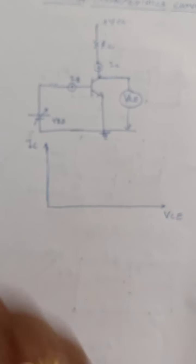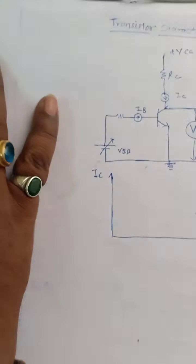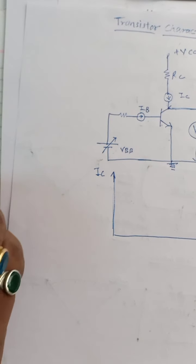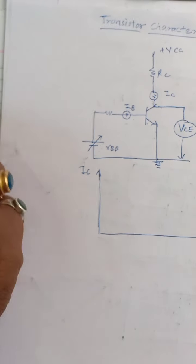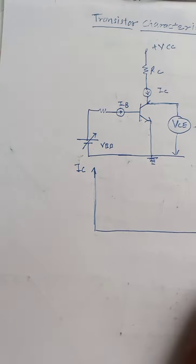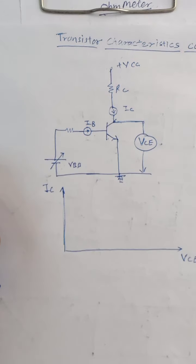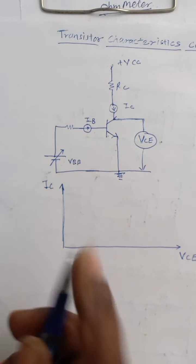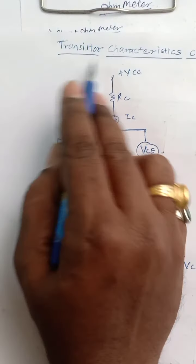Good morning. Today we are going to start chapter number 2 from paper 2nd, that is transistors. We are already half through the chapter, so we will start again from the transistor characteristic curves.